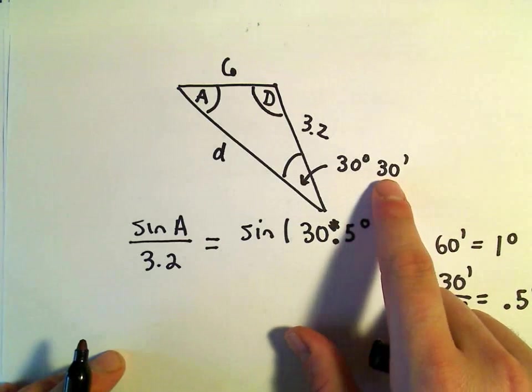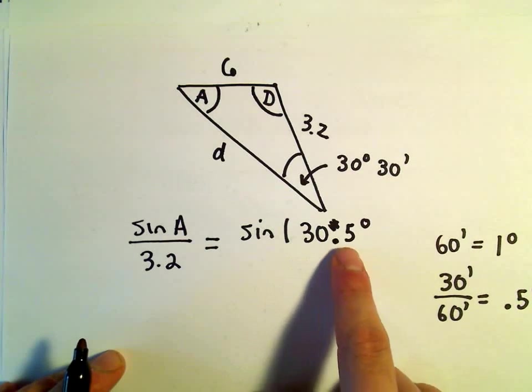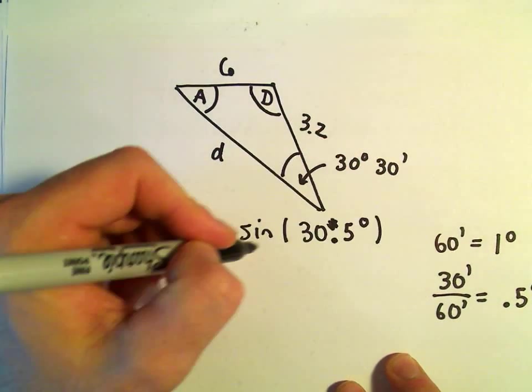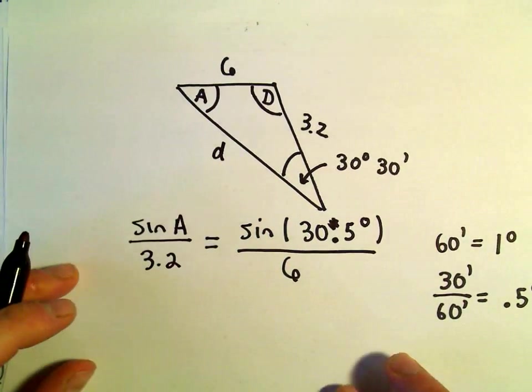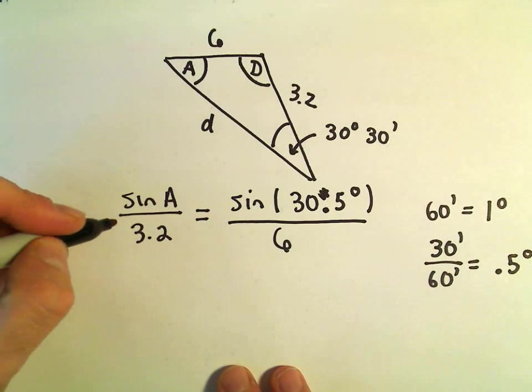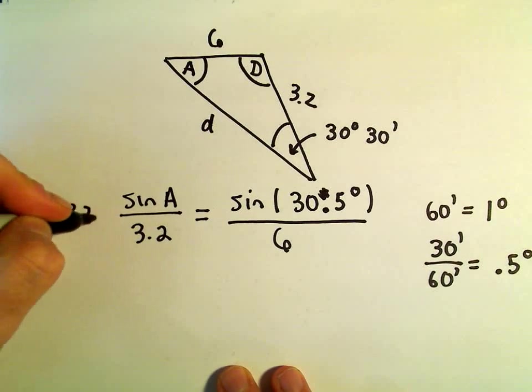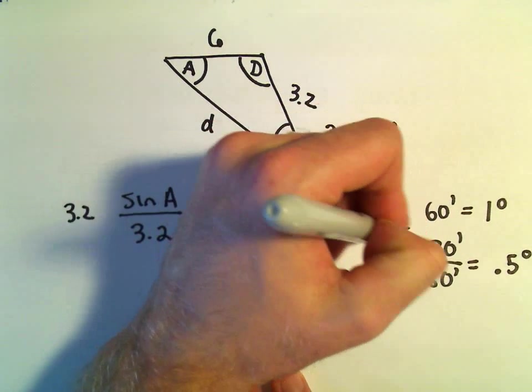So 30 degrees 30 minutes is the same thing as 30.5 degrees all over the length opposite that, which is just going to be 6. So now what I'm going to do is just multiply both sides by 3.2.